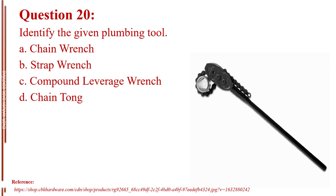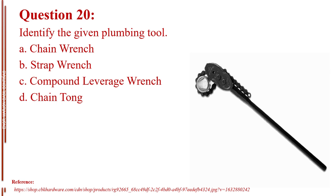Question number twenty. Identify the given plumbing tool. Letter A, chain wrench. Letter B, strap wrench. Letter C, compound leverage wrench. Letter D, chain tong. The answer is Letter D, chain tong.